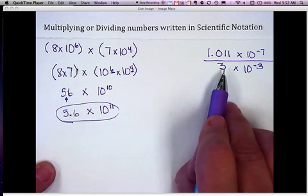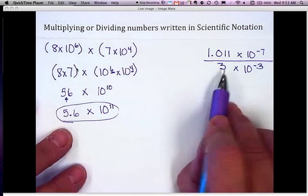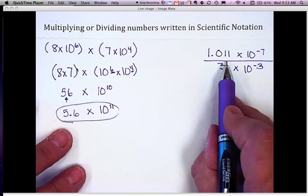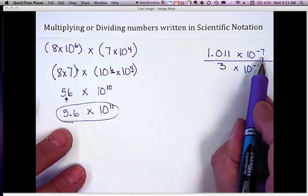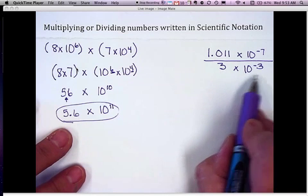So now we're going to do dividing in scientific notation. So I have 1.011 times 10 to the negative 7th being divided by 3 times 10 to the negative 3rd.